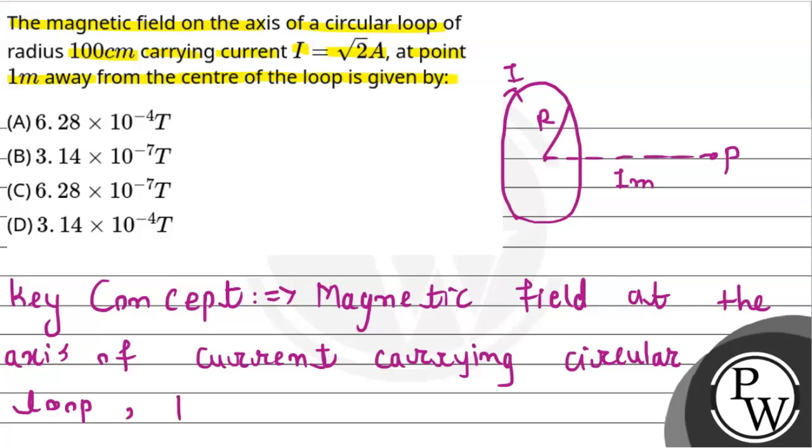This can be given by the formula: B equals μ₀ times I times a squared divided by 2 times (a squared plus d squared) to the power 3/2.